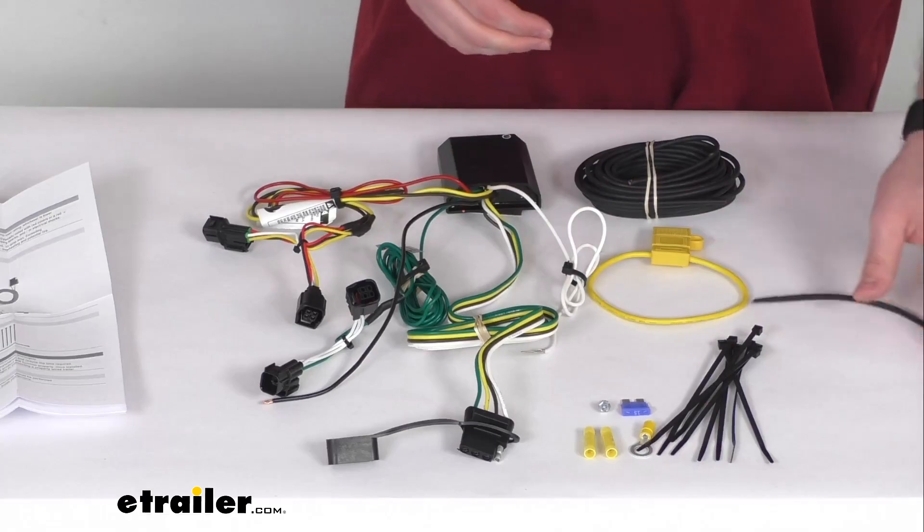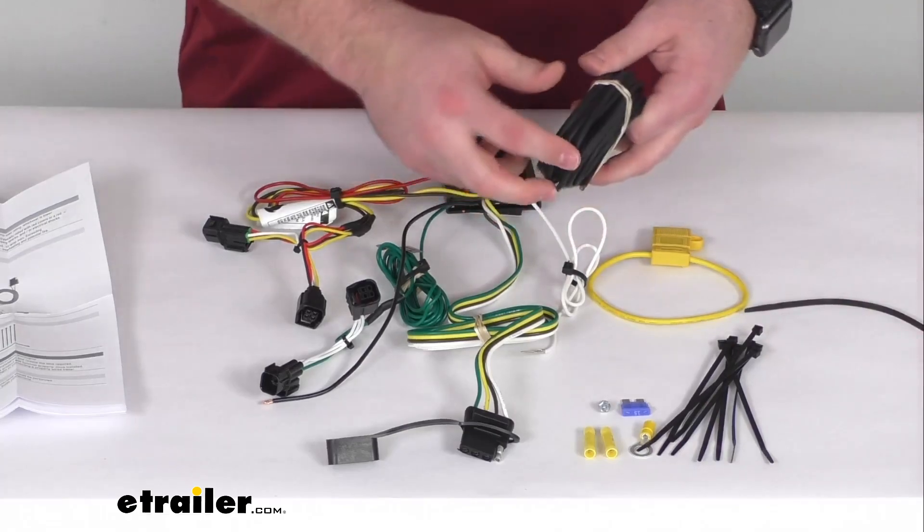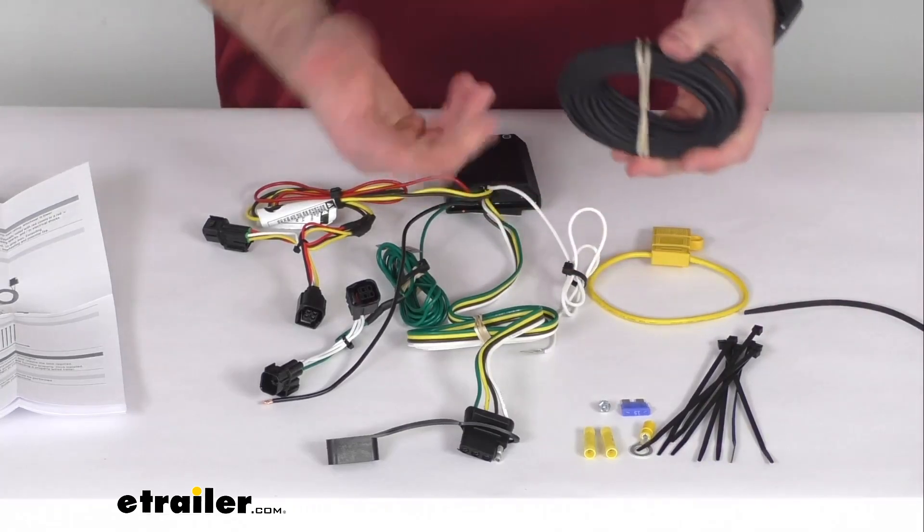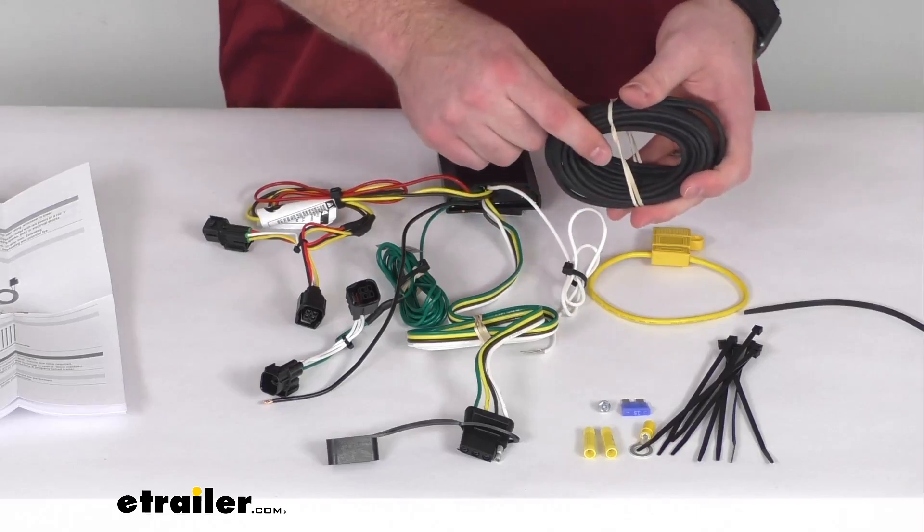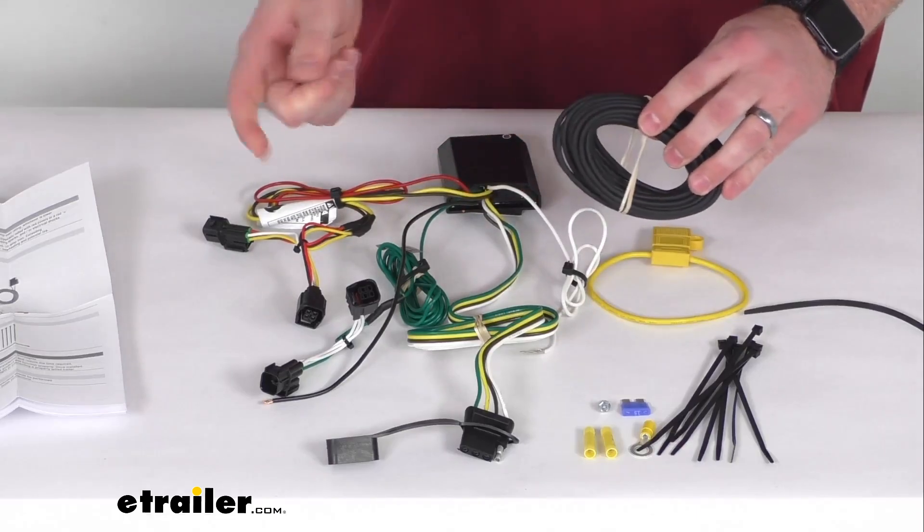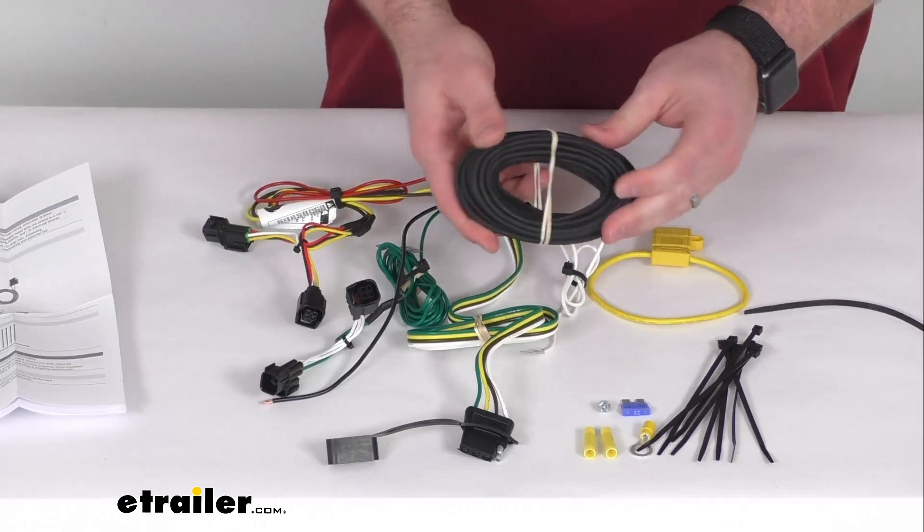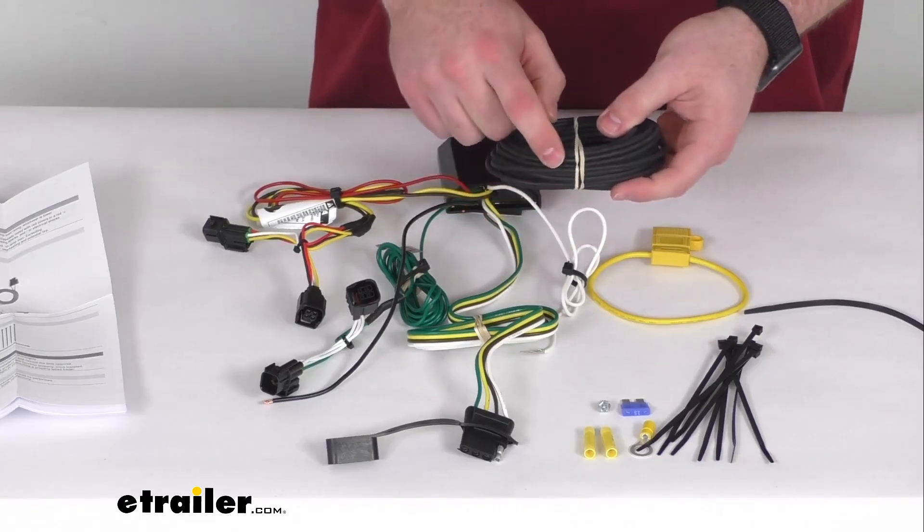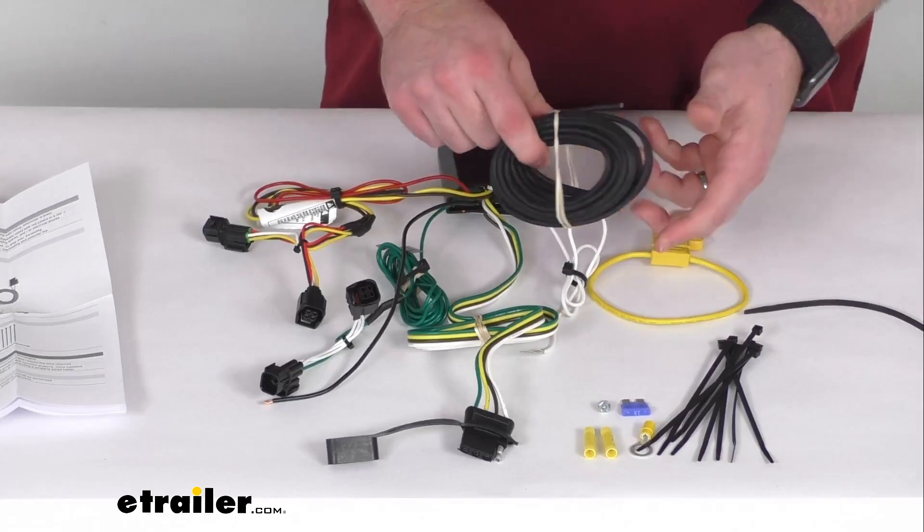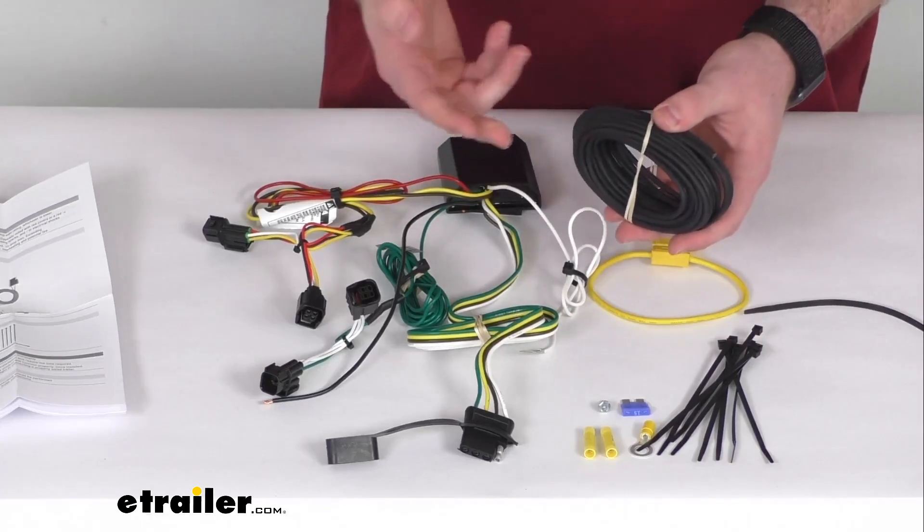They also include some zip ties to make sure that as you're running this wire up you can keep it wherever you like it. You do want to make sure that as you're running this wire up to your battery compartment that you're going to stay away from anything that's hot or moving that could potentially damage the wire. And this is probably going to be the most difficult part of the whole installation.